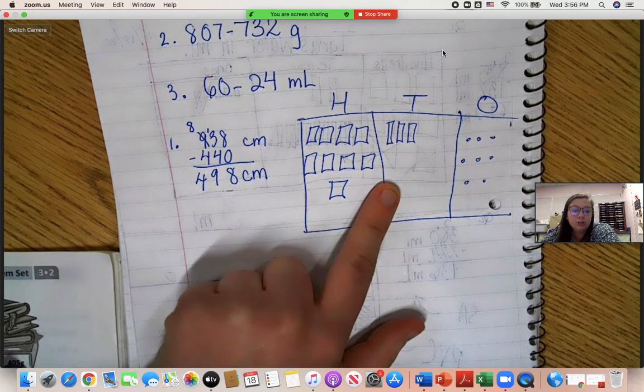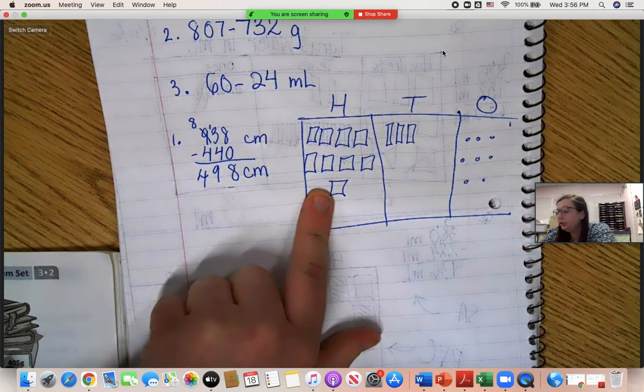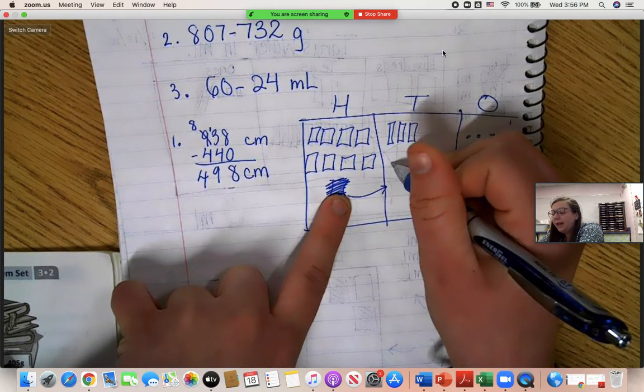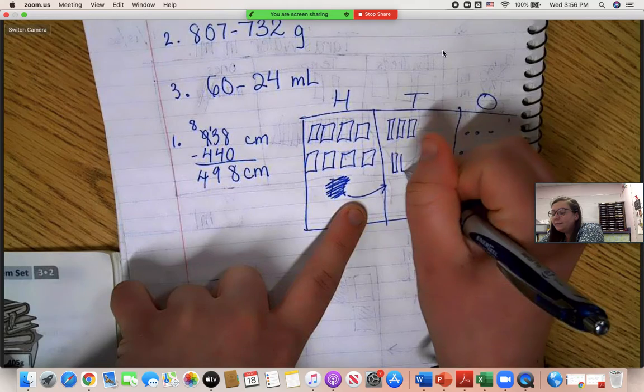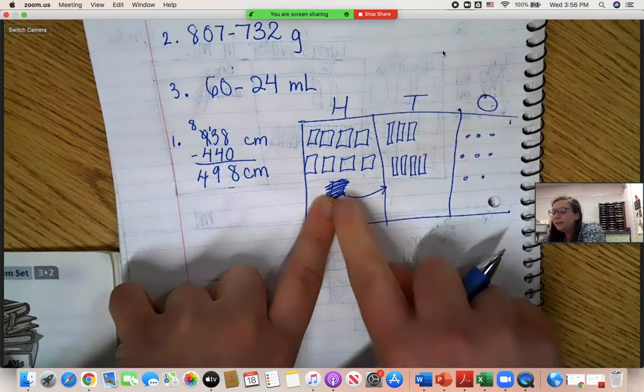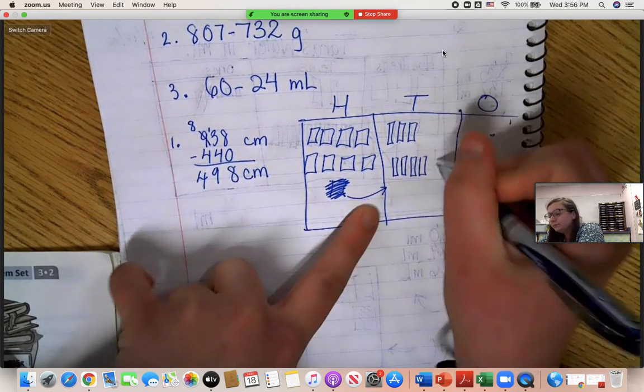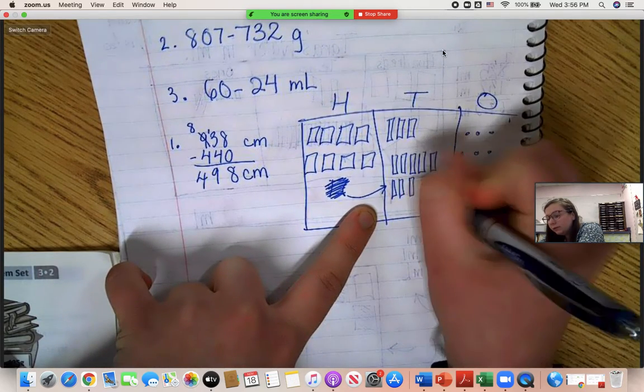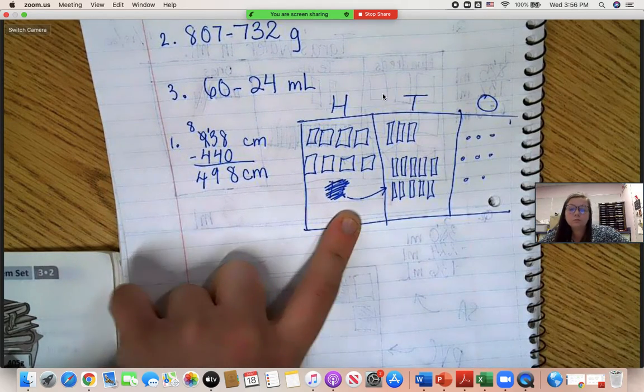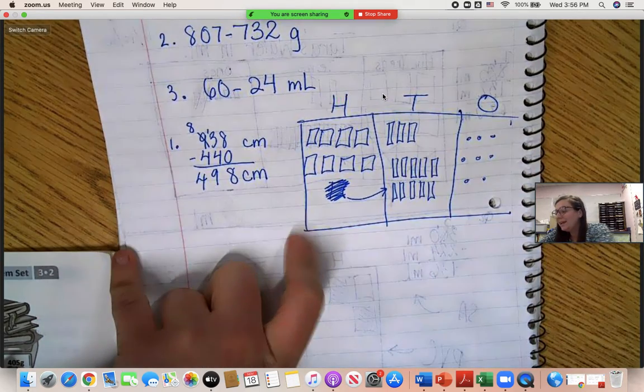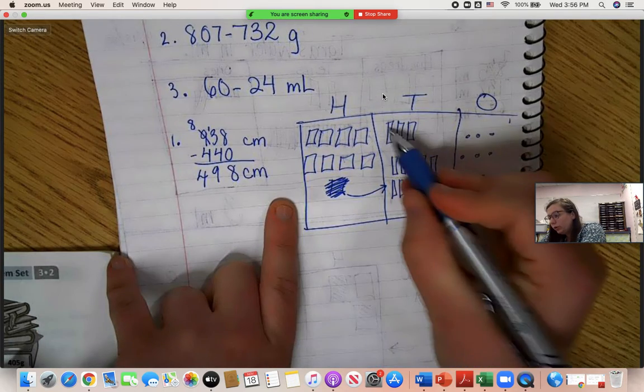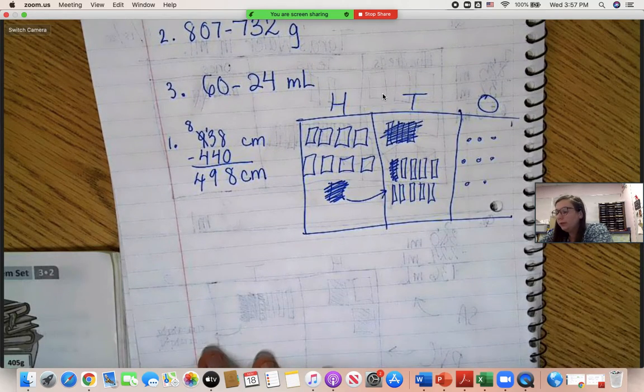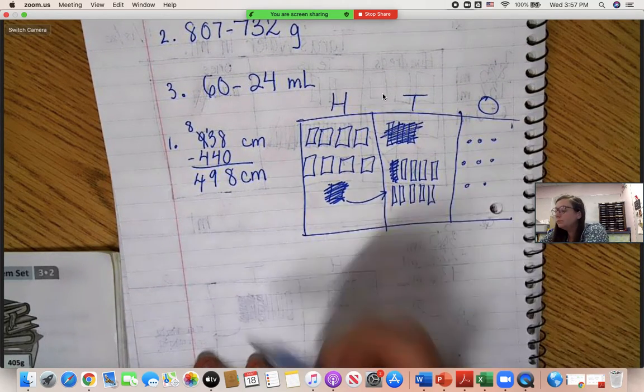What do we have to do? We have to borrow. We have to regroup. Take away one of these. Put it over here. Ten. Tens make a hundred, right? So, one of these becomes ten of these. One, two, three, four. Ten. Okay. Now, can we take away four? Yes, we can. One, two, three, four. Okay. We took away three, four. Took away our four.